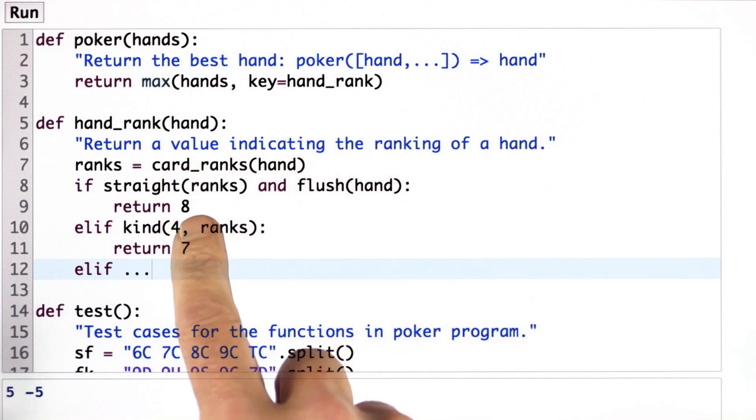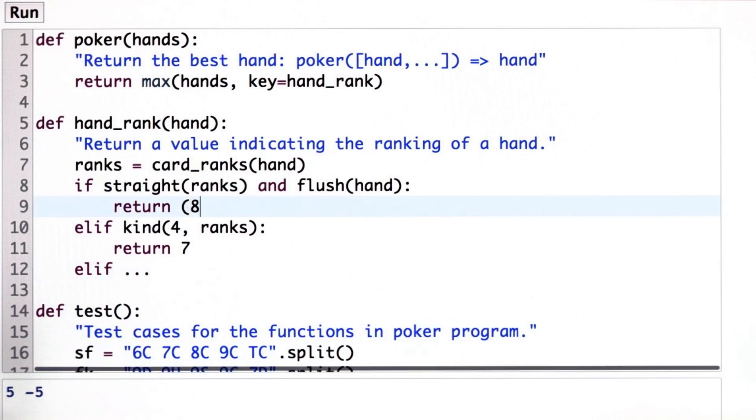But instead of having the value be an integer like it was before, now the value is going to be a tuple, where the first element of the tuple is still going to be the single value representing the type of ranking, 8 for a straight flush, for example.